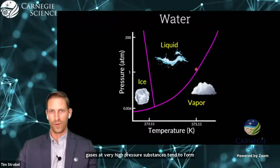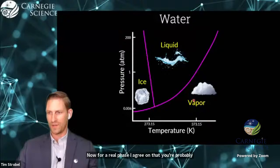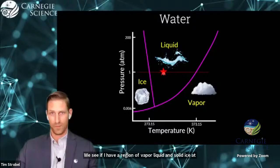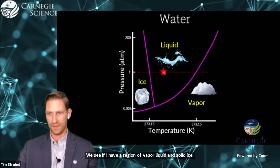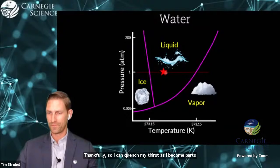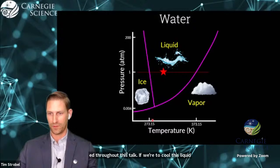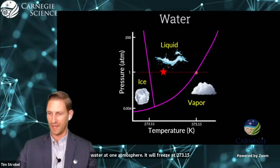For a real phase diagram that you're probably familiar with, that of water, we see we have a region of vapor, liquid and solid ice. At one atmosphere pressure, where we are in Washington DC right now, we have water in the liquid state at room temperature. If we cool this liquid water at one atmosphere, it will freeze at 273.15 Kelvin, zero degrees Celsius. Likewise, it will boil into a vapor state at 100 degrees Celsius.